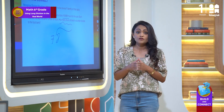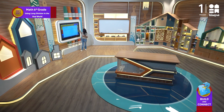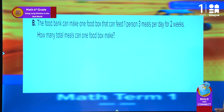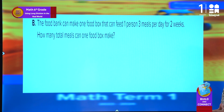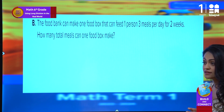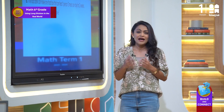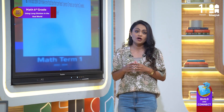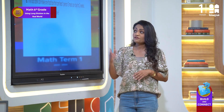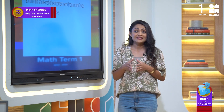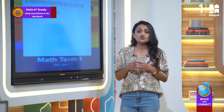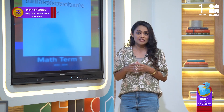Let's move to situation B. The food bank can make one food box that can feed one person three meals per day for two weeks. How many total meals can one food box make? From the information we have in this problem, we understand that we are asked to get the total number of meals in one box.